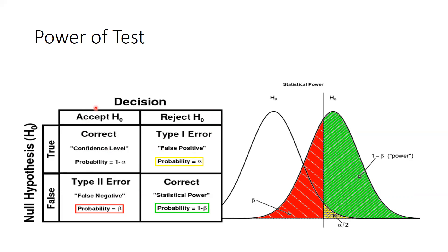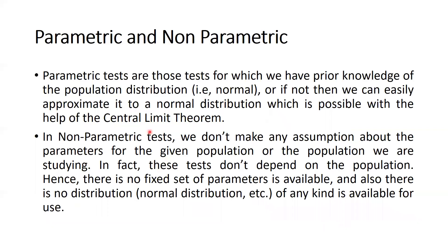Type 2 error means when our null hypothesis is false but still we are accepting it — that probability is beta. That is known as type 2 error. But when the null hypothesis is false and we are rejecting it, that is the correct decision, and here is the statistical power probability 1 minus beta. Type 2 error is more dangerous because we are accepting something wrong, whereas in type 1 error we are rejecting something that is correct, so that would not be harmful to anyone.